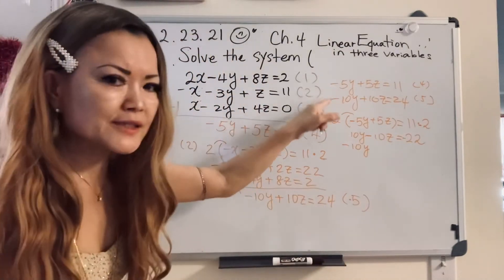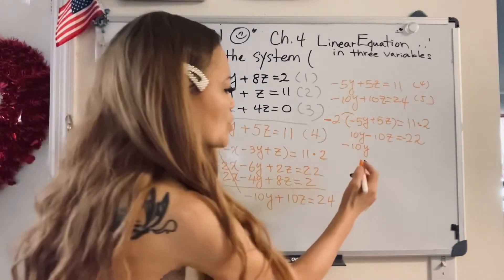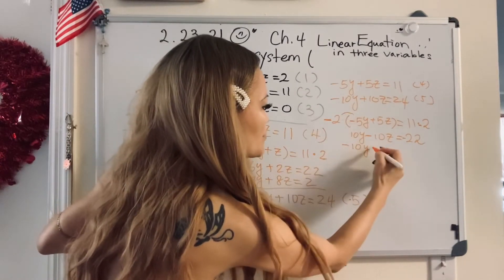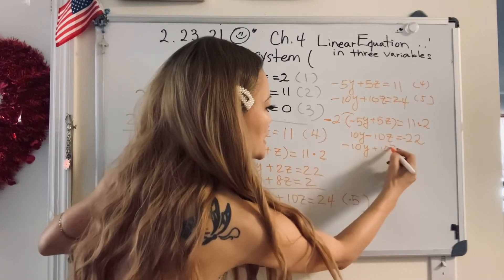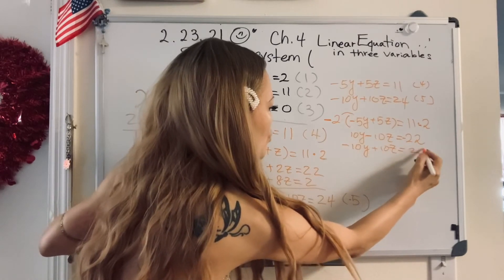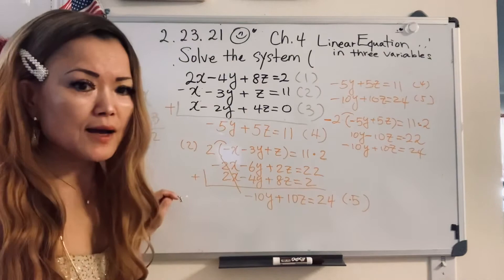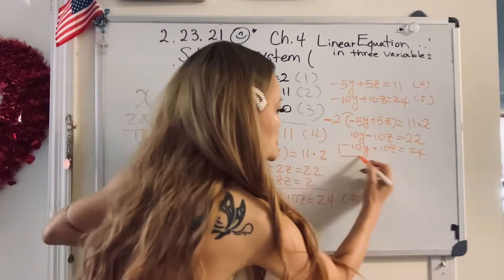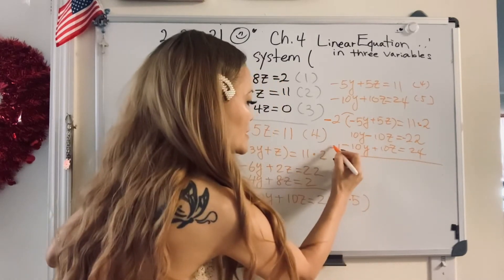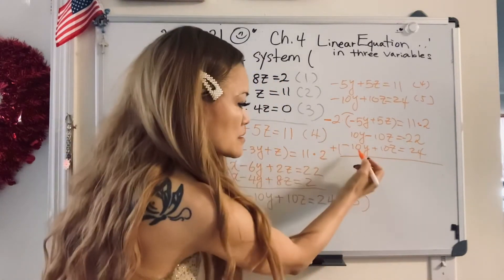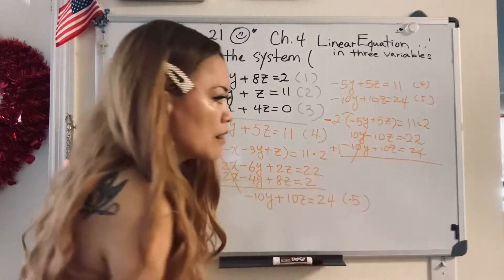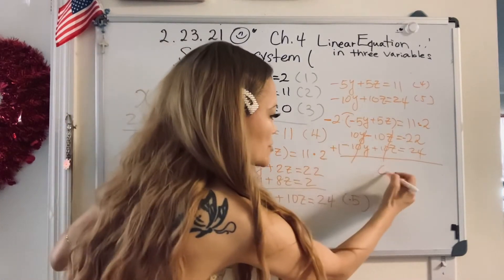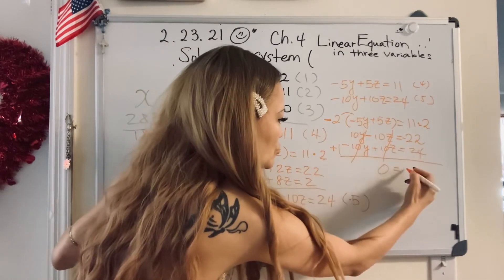Yeah, you got to make a different sign, right? So let's rewrite. Number five, negative ten y plus ten z equal 24. So different sign, same number, always you can make it zero, isn't it? So eliminate it. Let's add. 10 minus 10, bye-bye. Oh my god. 10 minus 10, bye-bye. Oh my god. Zero equal 24 minus 22, two.